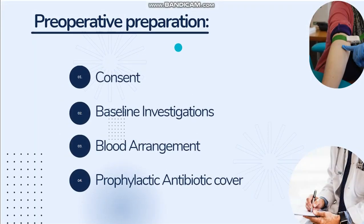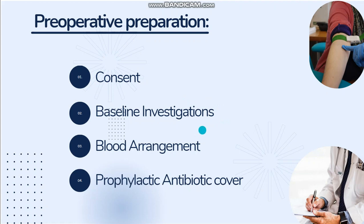For preoperative preparation, after obtaining consent we will go for baseline investigations: CBC, clotting profile, LFTs, RFTs, and serum electrolytes. Clotting profile is important to know the bleeding tendency of the patient so that we can arrange platelets, as they may be required during surgery or in the early post-operative period. Blood arrangement is very important according to the bleeding tendency of the patient, and can be in the form of fresh frozen plasma, cryoprecipitate, or platelets.